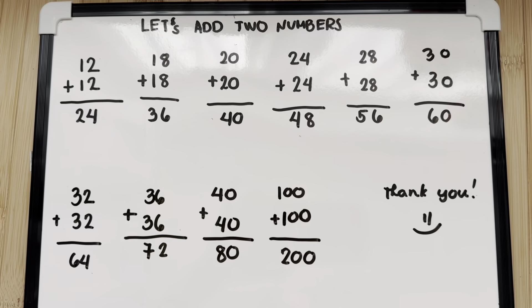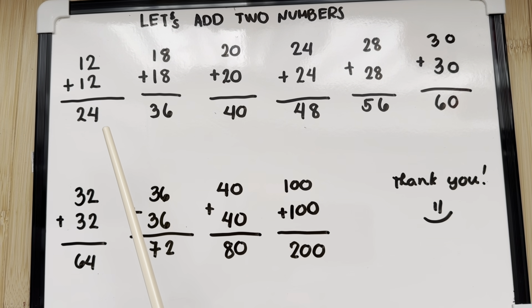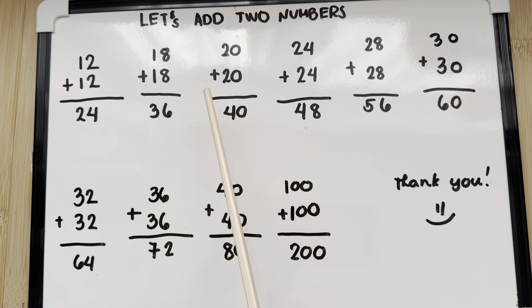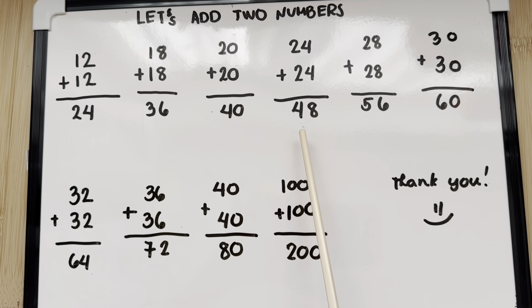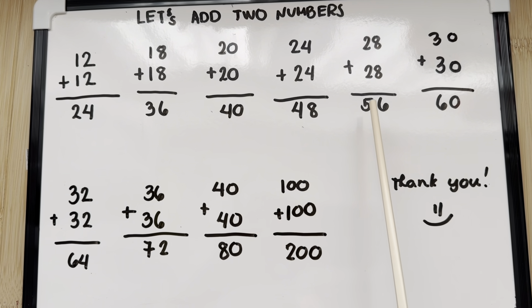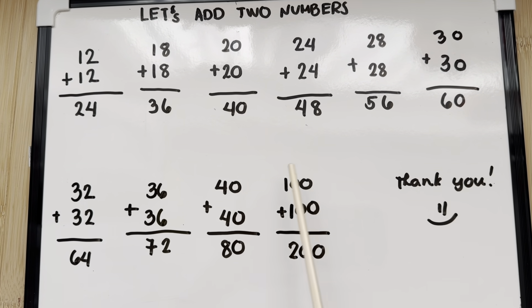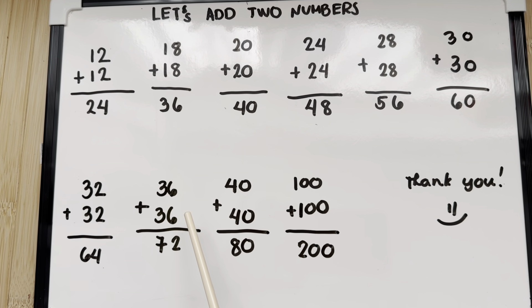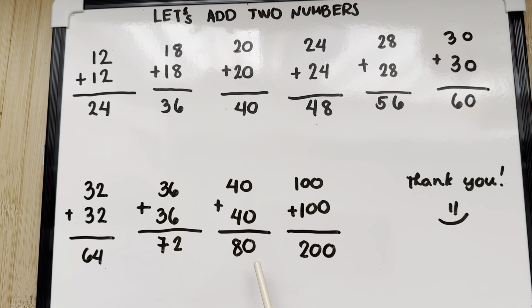Let's summarize. Let's add two numbers. Let's begin: 12 plus 12 is equals to 24. 18 plus 18 is equals to 36. 20 plus 20 is equals to 40. 24 plus 24 is equals to 48. 28 plus 28 is equals to 56. 30 plus 30 is equals to 60. 32 plus 32 is equals to 64. 36 plus 36 is equals to 72. 40 plus 40 is equals to 80. And lastly, 100 plus 100 is equals to 200.